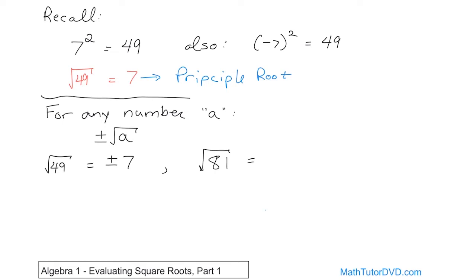Well, 9 times 9 is 81, so we know that 9 is going to be the answer, but really there are two answers. One of them is the principal answer. Positive 9 times positive 9 gives you 81, but negative 9 times negative 9 also works. So just keep in mind, when you take the square root of something — like when you're solving an equation — really there are two possible values: the positive principal answer, and the negative value as well.